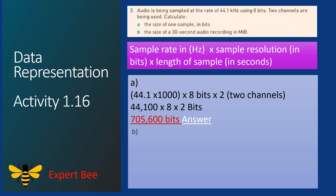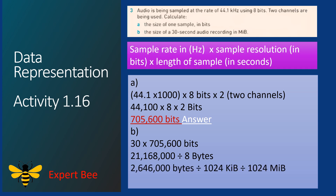For part (b), the size of a 30-second audio recording in megabytes: we multiply 705,600 by 30 to get 21,168,000 bits. Dividing by 8 gives 2,646,000 bytes. Dividing by 1024 converts to kilobytes, and dividing again by 1024 converts to megabytes, giving 2.5 megabytes.